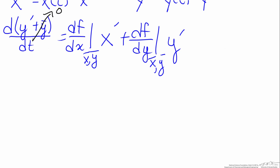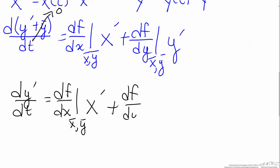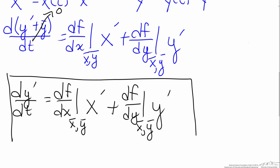Once we eliminate the dy-bar/dt term, we have our final answer: the derivative of the deviation variable y-prime equals df/dx evaluated at the steady states multiplied by x-prime, plus df/dy evaluated at the steady states multiplied by y-prime. If you were to have more than two variables — for example x, y, and z — you would just add a similar term for z, with derivatives evaluated at the steady states x-bar, y-bar, and z-bar.